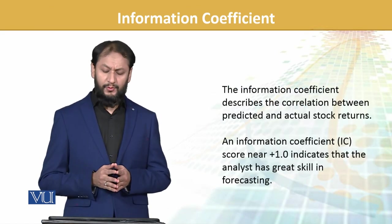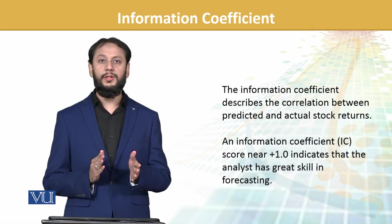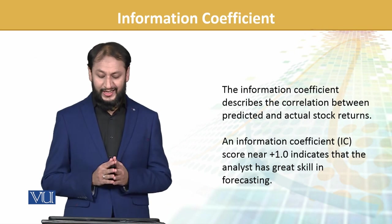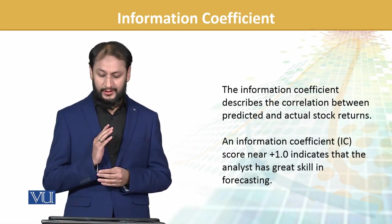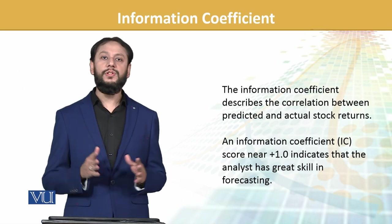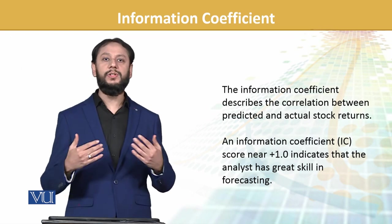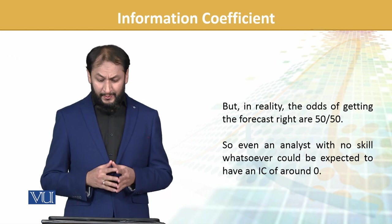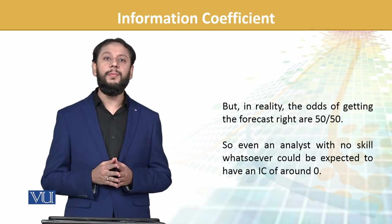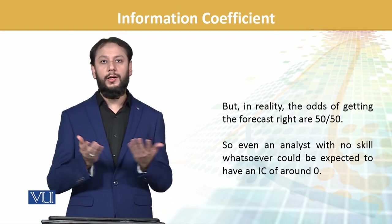The information coefficient describes the correlation between predicted and actual return — humari prediction kya thi aur actual kya tha aur unka aapas mein linkage kya hai. An information coefficient near 1 indicates that the analyst has great skill in forecasting — uska jo valuation hai ya jo path adopt kar raha hai wo bahut accha hai aur uski forecasting rightful hai. But in reality, the odds of not getting forecast right are 50% — aapne kaha ye ek share badhega to 50% chance hai badhega, 50% chance hai girega.